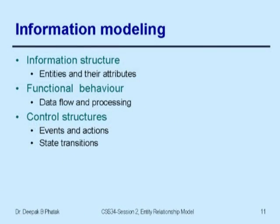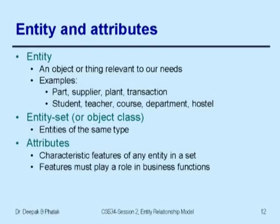The information modeling aspect — the crux of analysis — defines information structure: which entities and attributes participate in the information system, what the functional behavior is, how data flows and is processed, and what the control structures are. The Entity Relationship model is a classical model of information systems. Although software professionals currently use object-oriented paradigms such as UML, the ER model is so fundamental, important, and easy to understand that we'll start with it.